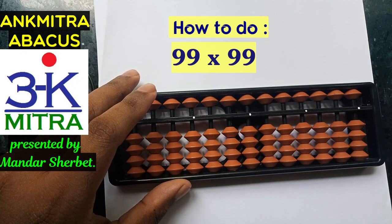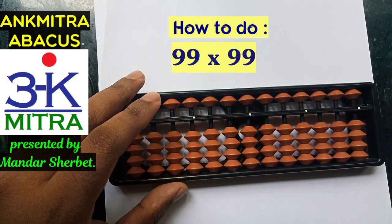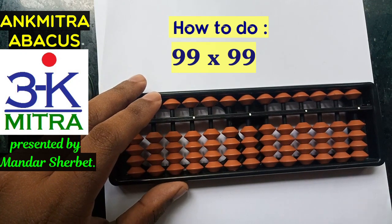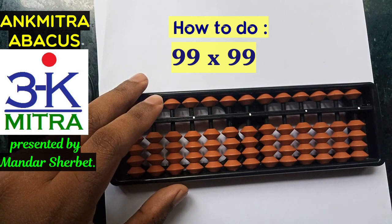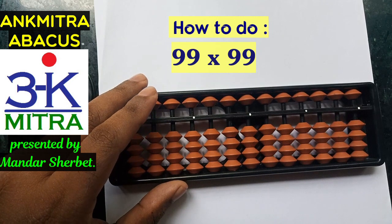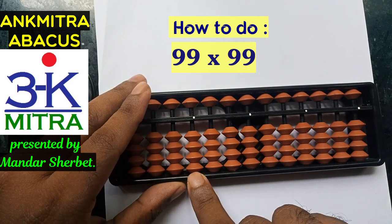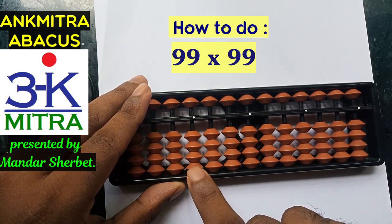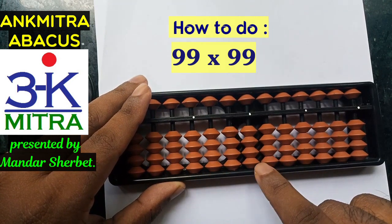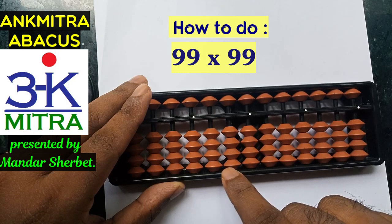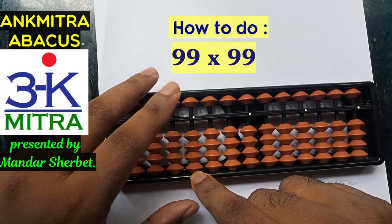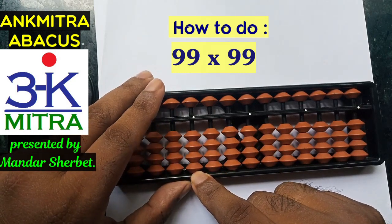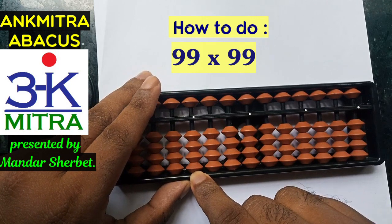Since it's a two-digit number multiplied by a two-digit number, the procedure starts from the fourth rod. The total number of digits in the two numbers is where we start our multiplication procedure. So we start on the fourth rod — this is our fourth rod. All digits are nine, so the tens place and units place digits of both numbers are nine.